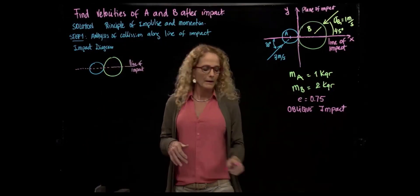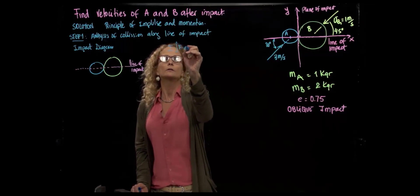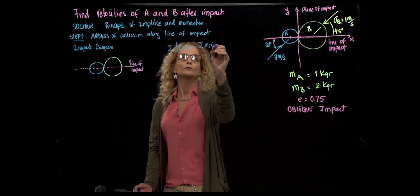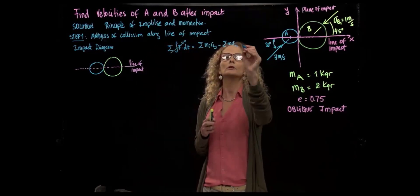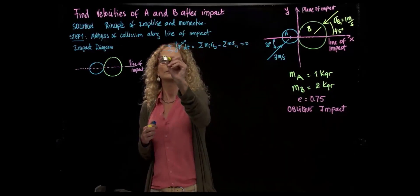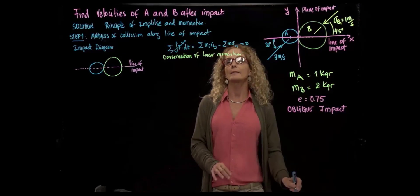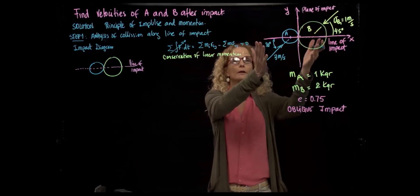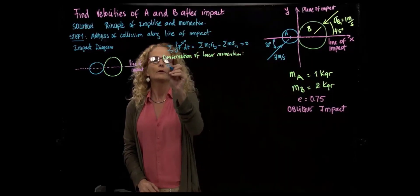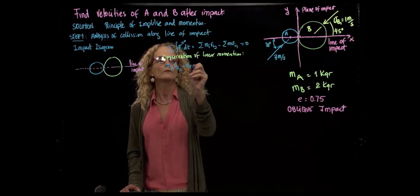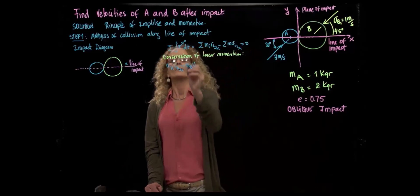With that diagram, applying the principle of impulse and momentum, the sum of all forces equals linear momentum in position 2 minus linear momentum in position 1. Since there are no external forces, this equals zero — this is the conservation of linear momentum. Expanding that, the linear momentum in the final position equals the linear momentum before impact. So: mass A times velocity of A after impact, plus mass B times velocity of B after impact, along the line of impact in the x direction.